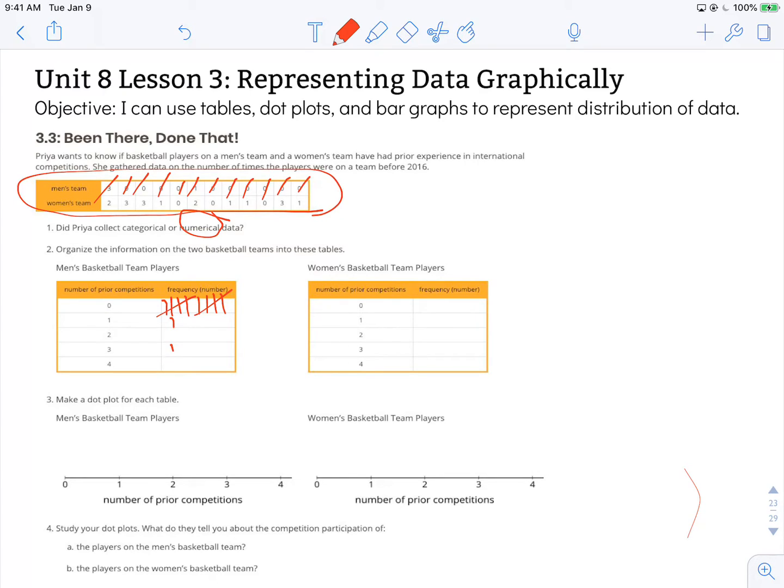And then for the women's data, we have a two, and then two threes, and then a one, a zero, a two, a zero, two ones, a zero, a three, and a one. So this is ten, one, zero, one, zero. And over here we have three, four, two, three, zero.